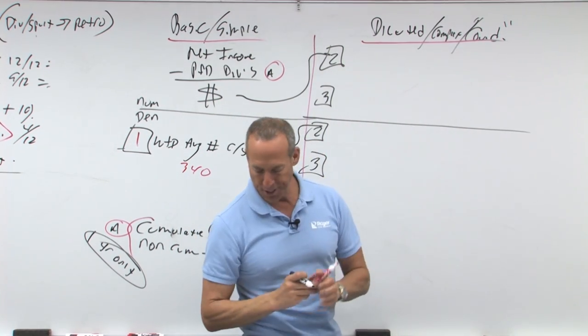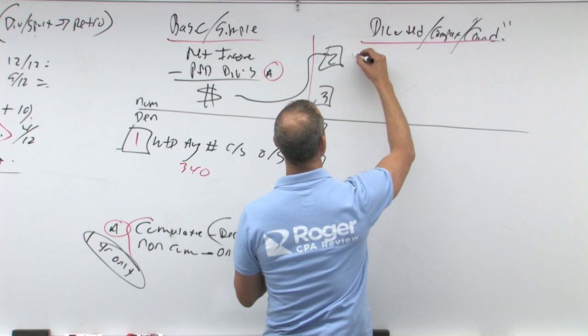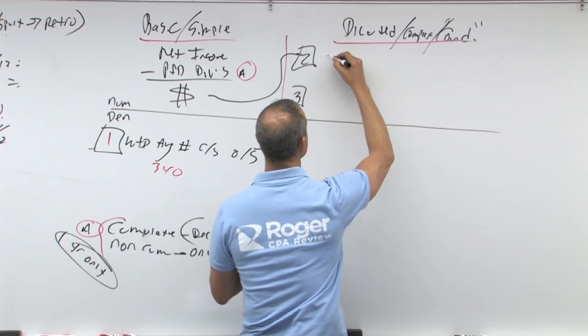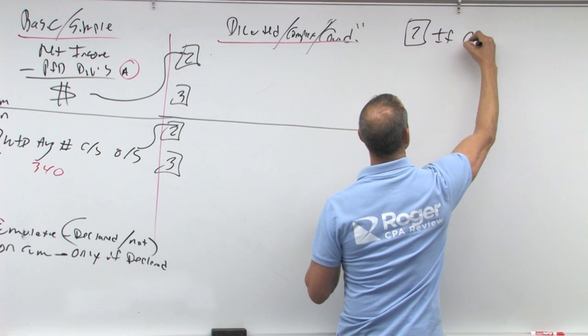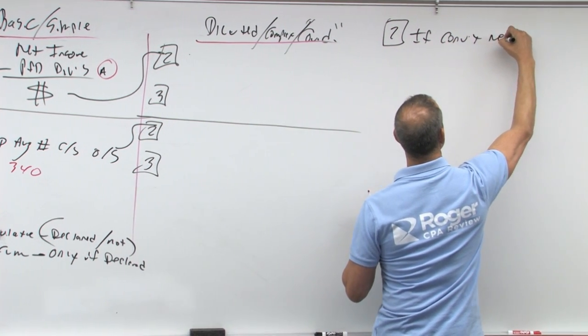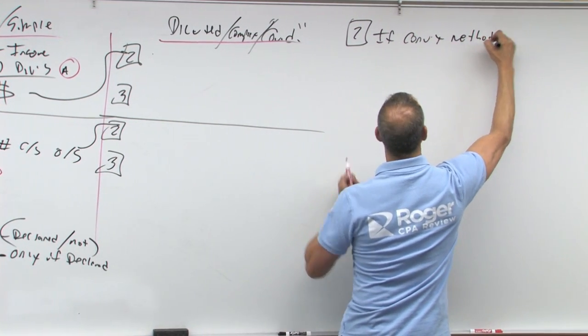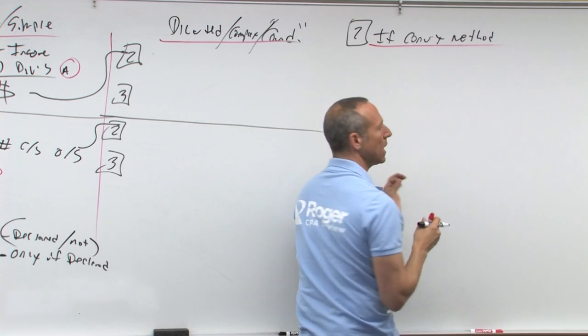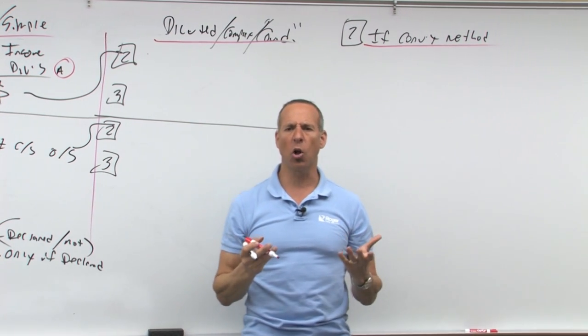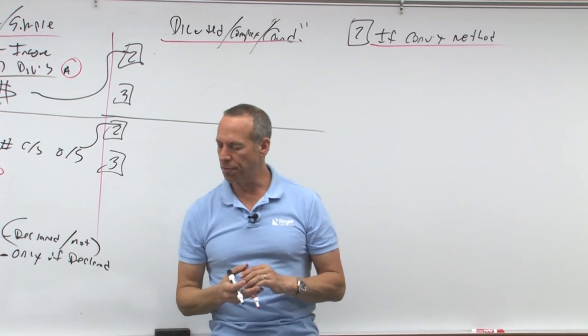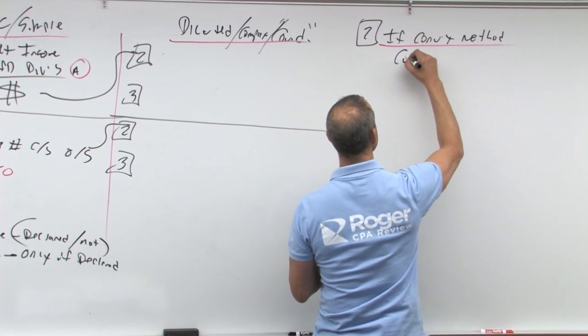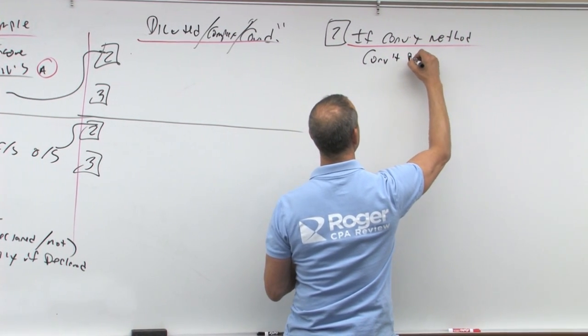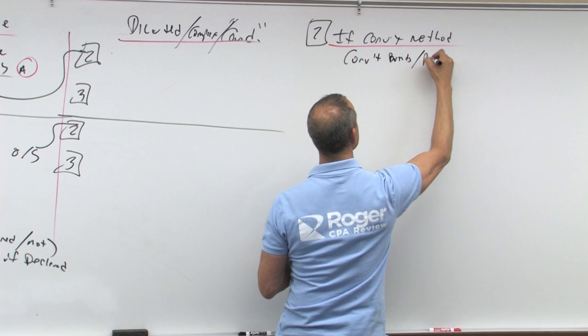Number two is called the if converted method. So two, I'm going to put over here, if converted method. Now what does the if converted method mean? What kind of things are convertible? We could have convertible bonds, convertible preferred stock. So this is going to be for convertible bonds and preferred stock.